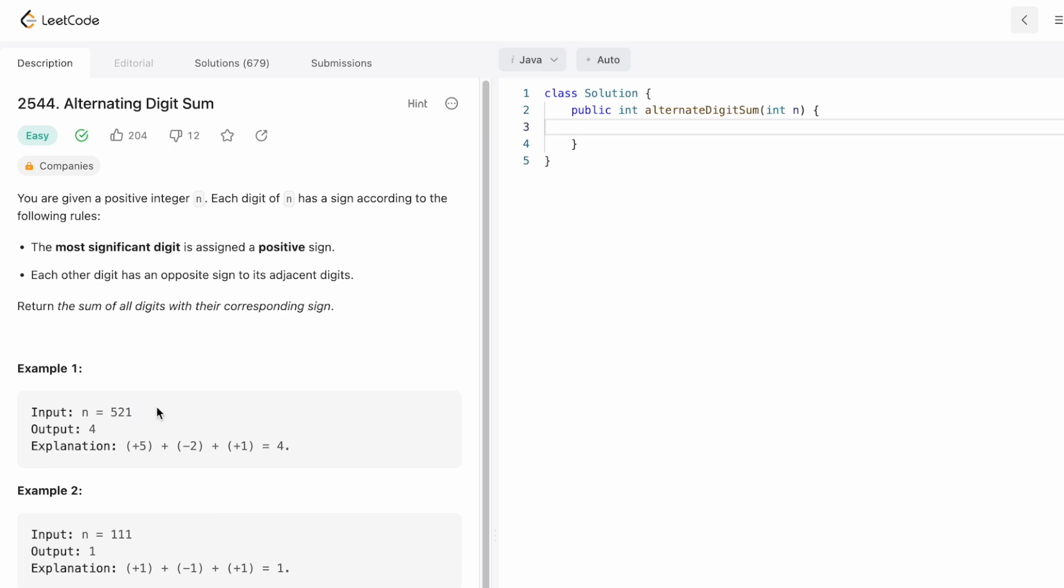Let's take a look at the examples. In the first example, we are given n where n equals 521. The most significant bit here is 5, which is assigned positive, so we start with a positive digit. The adjacent digit is 2, so it is assigned a negative digit, and its adjacent digit is 1, which is again a positive digit. So we start with plus 5 minus 2 and plus 1, which gives us 4.